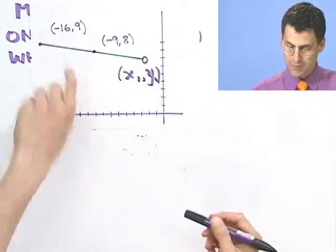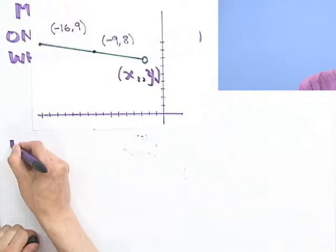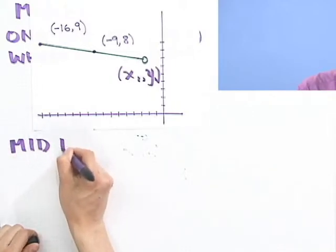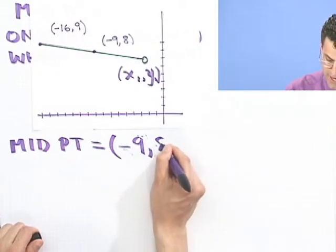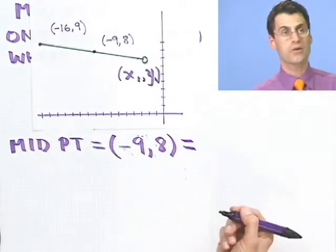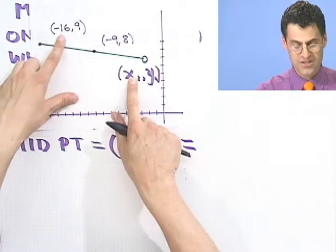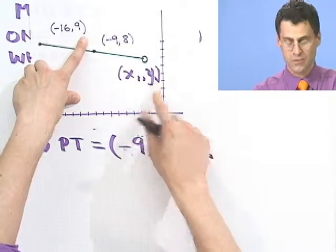So this midpoint, which we know equals minus 9 comma 8, we also know can be found by finding the averages of the x values and the averages of the y values.